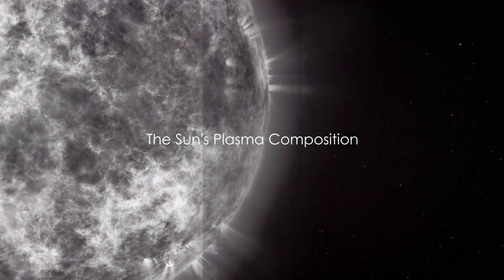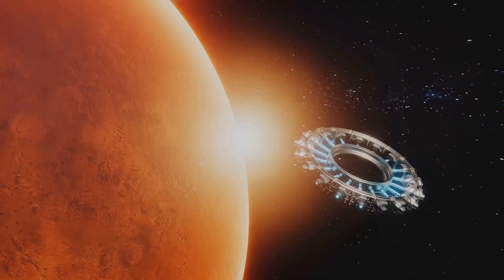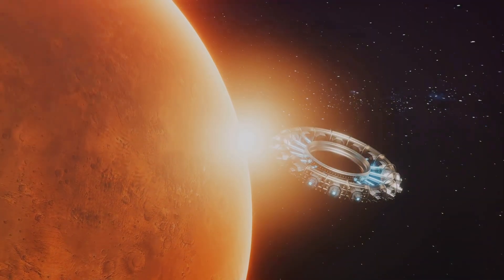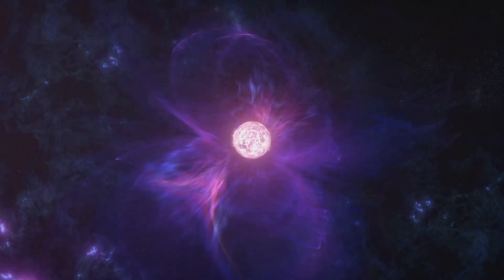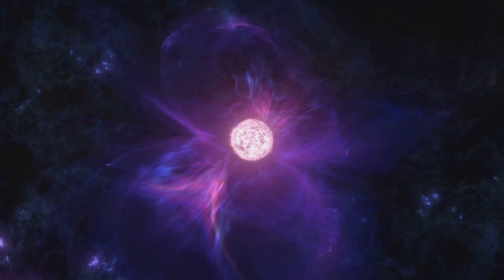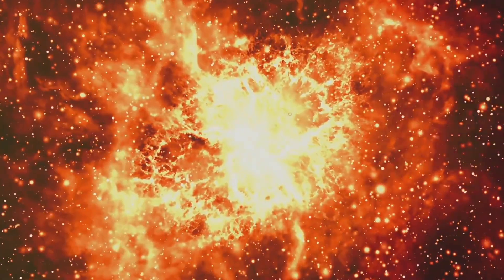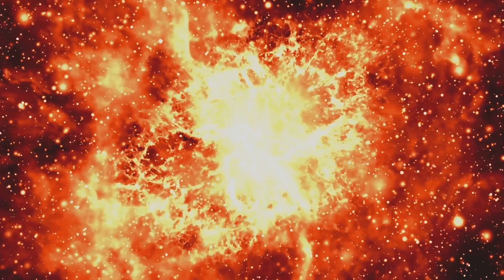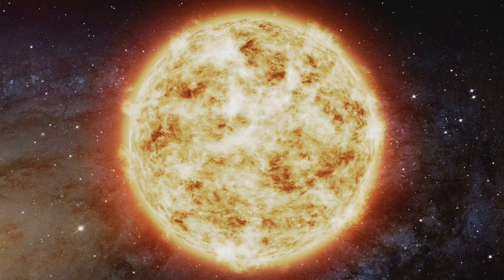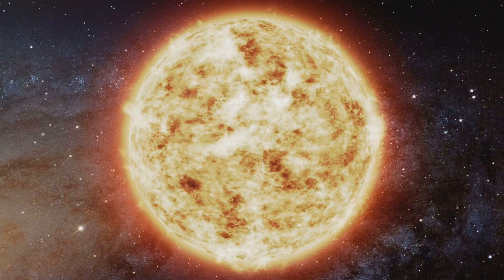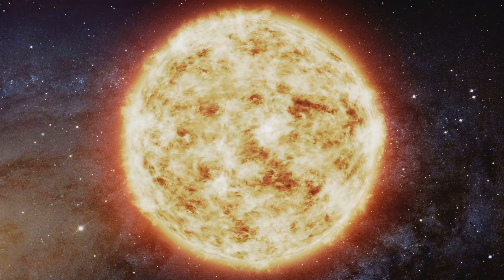At its core, the sun is a colossal sphere of unfathomably hot plasma. This plasma is a churning mass of ionized gas that defies comparison to anything we encounter on Earth. It's a state of matter so extreme, so energetic, that the very atoms themselves are ripped apart into a soup of individual particles. This plasma is composed almost entirely of hydrogen and helium, the two lightest elements in the universe. These elements make up about 98% of the sun's mass, with the remaining 2% consisting of heavier elements like oxygen, carbon, and iron.